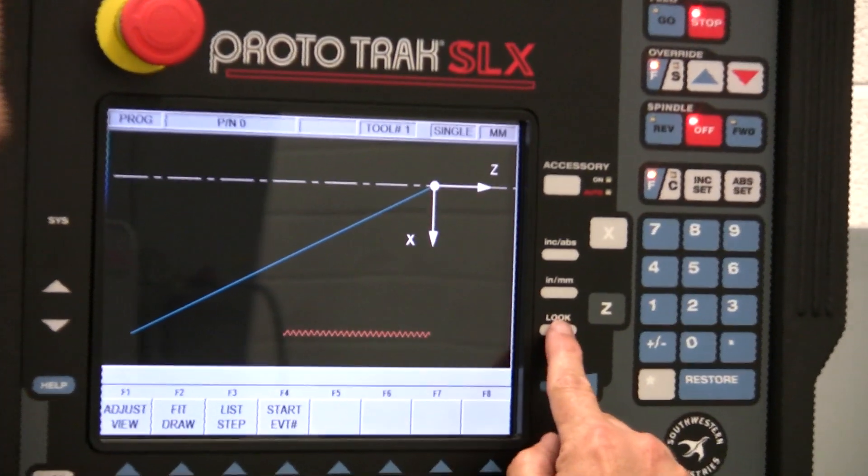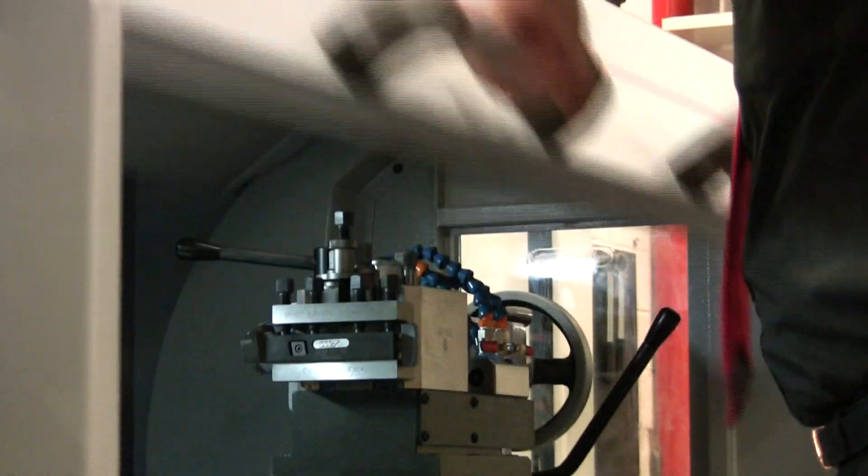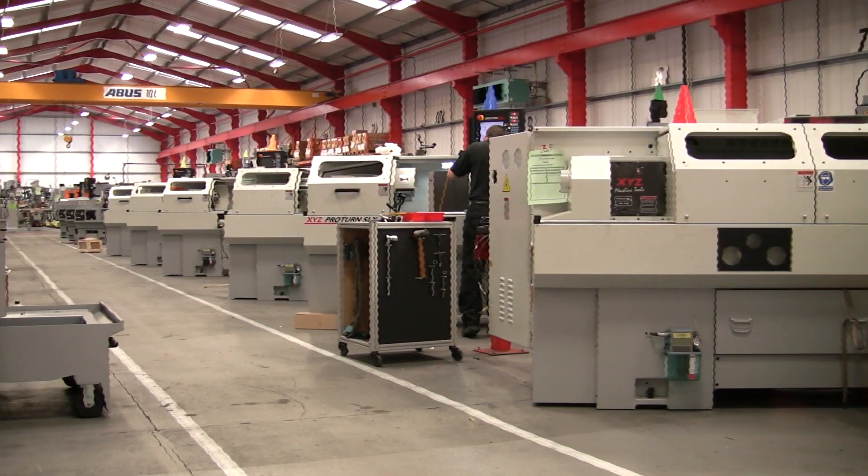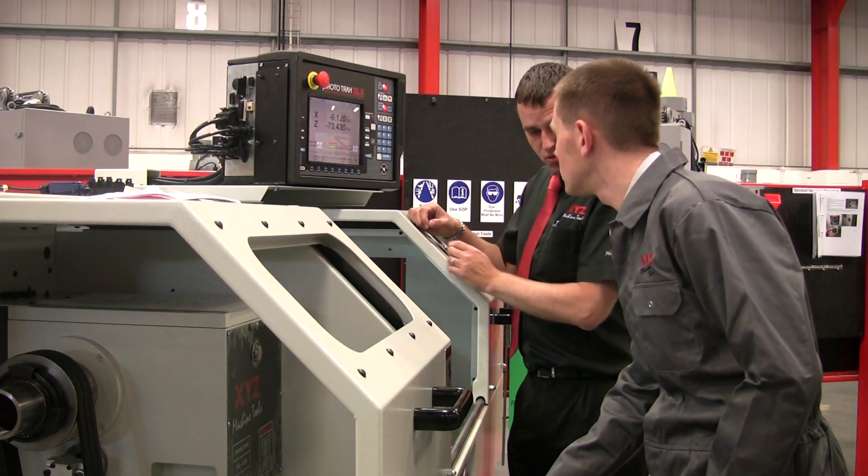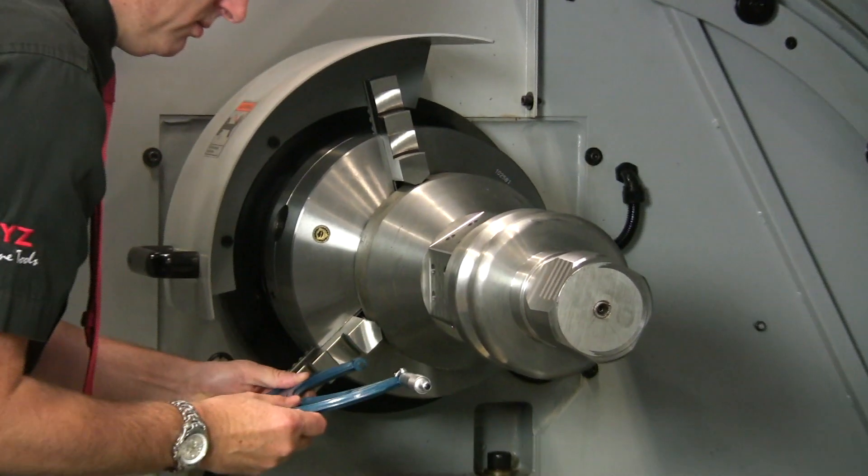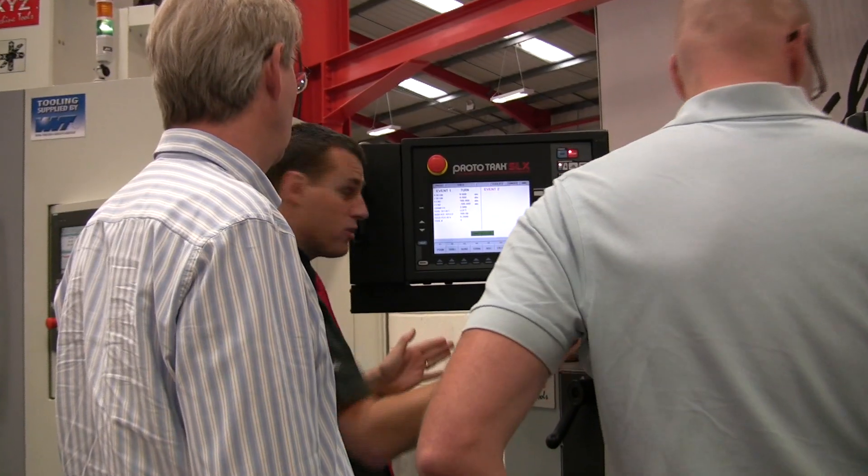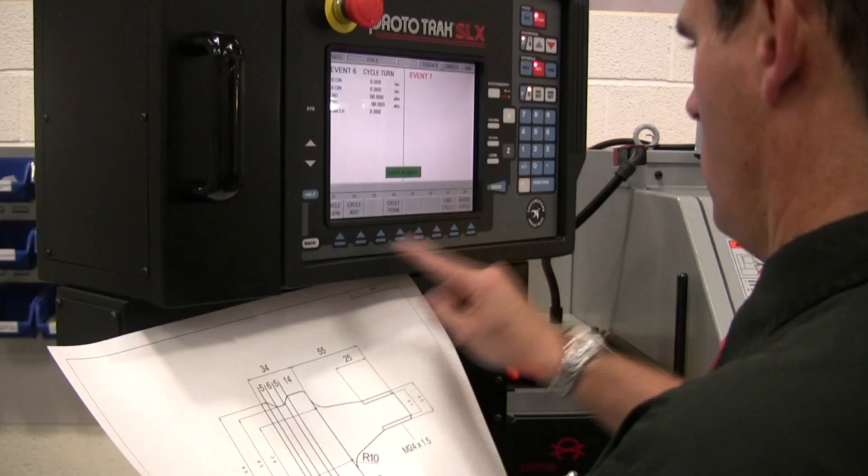Combine a great control with a great lathe and you get the XYZ Pro Turn. The Prototrack control comes on a range of lathes, from small trainer lathes up to 3 metres between centre lathes, and the best news is it is easy to use as a Prototrack mill.